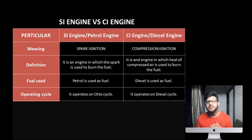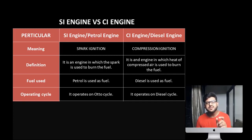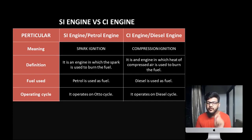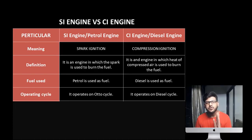Next is operating cycle — on which cycle the engine works. In SI engine or petrol engine, the Otto cycle is working. In the Otto cycle there are two constant volume processes. Now why is it constant volume? Because in petrol engine, we are using an air plus fuel mixture from the start, so we are not adding anything during the cycle. So the volume remains constant, and that is why it follows a constant volume cycle.